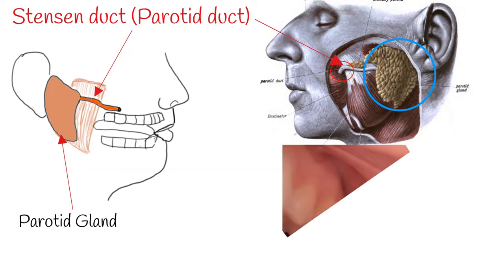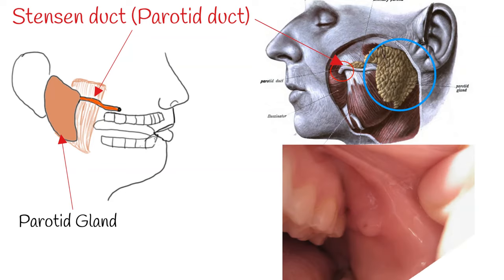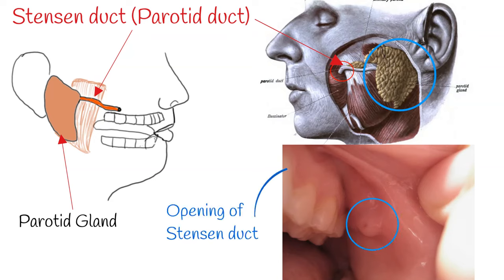The opening of Stenson duct is into the vestibule of the mouth — the region between the cheek and the gums — at the parotid papilla, which lies across the second maxillary upper molar tooth. The exit of the parotid ducts can be felt as small bumps, or papillae, on both sides of the mouth.